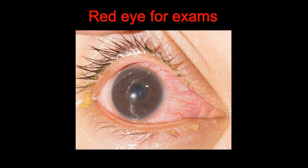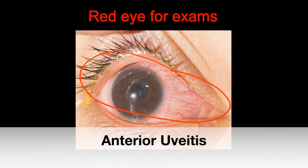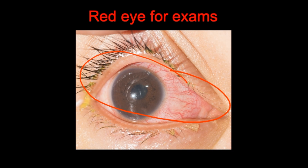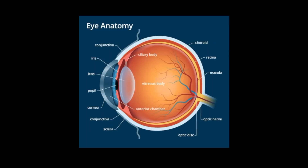In this video we're going to be focusing on this condition here, which is known as anterior uveitis — a subtype of the broader umbrella term uveitis. Anterior uveitis is inflammation of the middle layer of the eye, which is comprised of the ciliary body as well as the iris, which is the coloured part of the eye, so anterior uveitis is affecting this region of the eye.